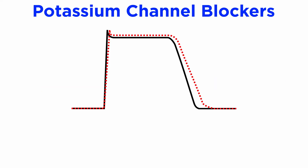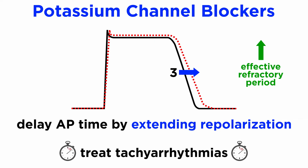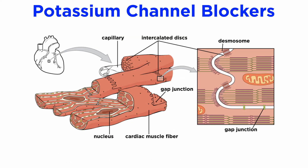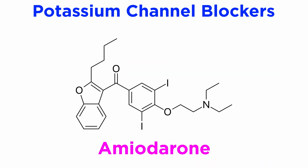Type 3 drugs are potassium channel blockers, which delay the action potential time of cardiomyocytes by extending the repolarization phase of the action potential, phase 3. This increases the effective refractory period and is effective at treating tachyarrhythmias. If there is an uncoordinated action potential generated, the neighboring tissue may be refractory and non-conductive, which can result in normal rhythm being reestablished. An example of a class 3 antiarrhythmic is amiodarone.